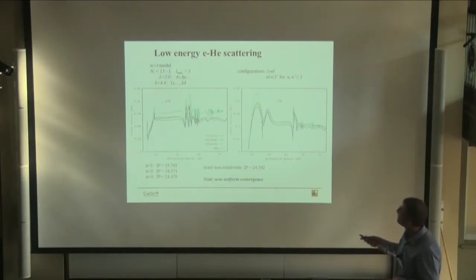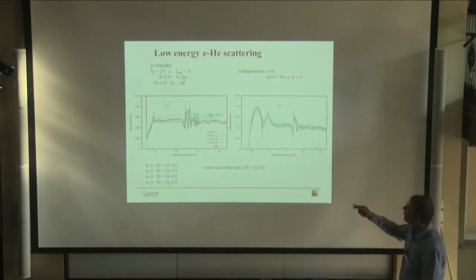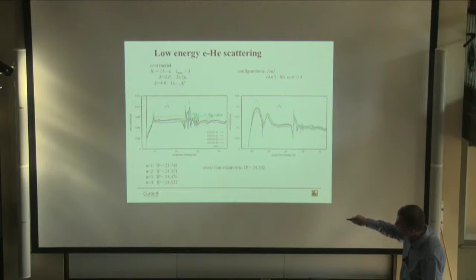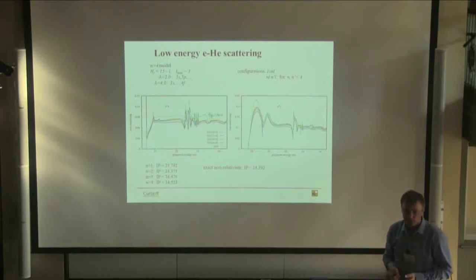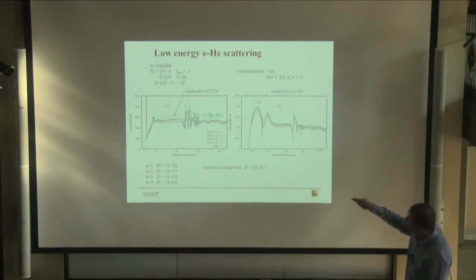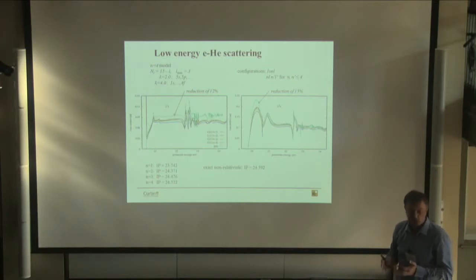We can improve further by running all configurations up to n≤4 with short-range functions, which further improves the ground-state energy. The red line is now really close to the previous green line, so we need convergent results to some accuracy, probably about 3 to 5 percent. The reduction from the R-matrix result to our result is about 20% at the peak, and about 15% at maximum — quite a lot for the most basic cross-section.